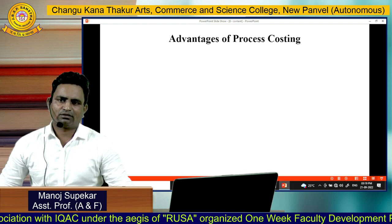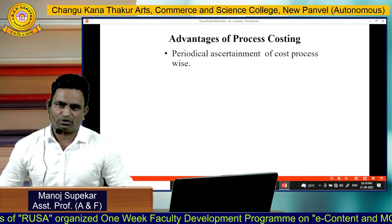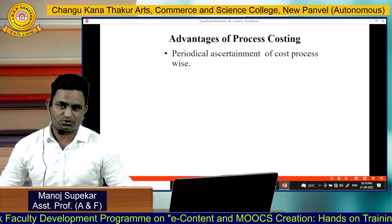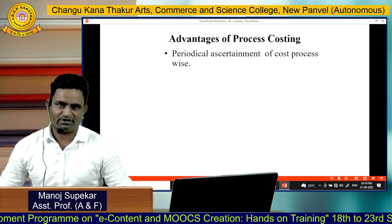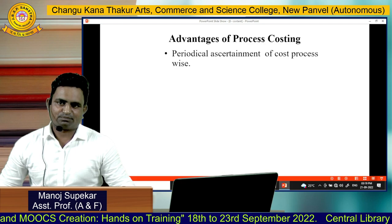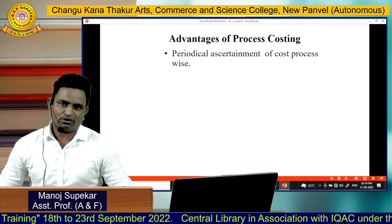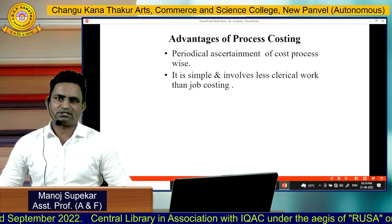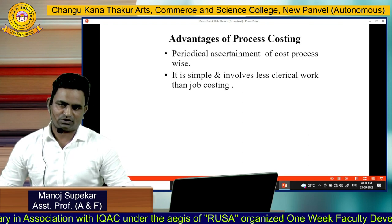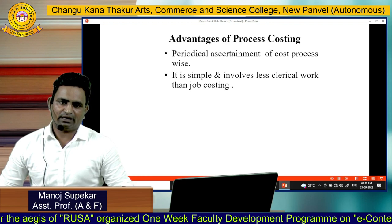Now, what are the benefits of process costing to manufacturing organizations? The first important advantage is periodical assessment of cost, process-wise. For example, if a manufacturer assesses cost on a monthly basis, the periodic production cost will be assessed. The second advantage is that it is simple and involves less clerical work than job costing, as process costing finds out the value of goods according to each process.